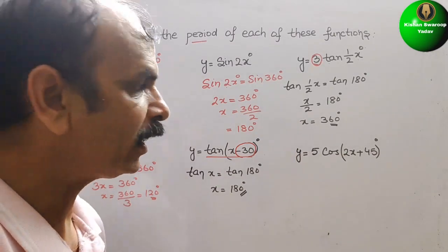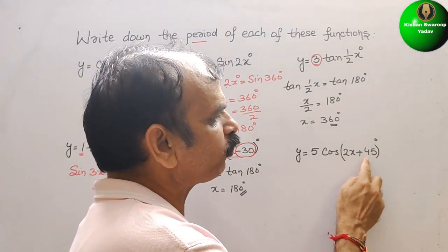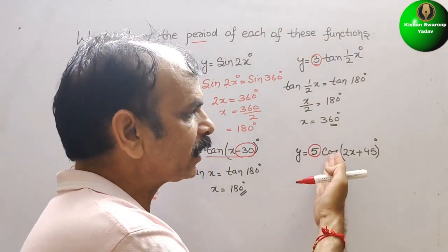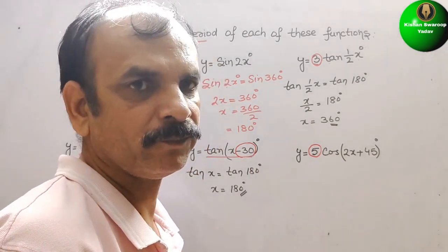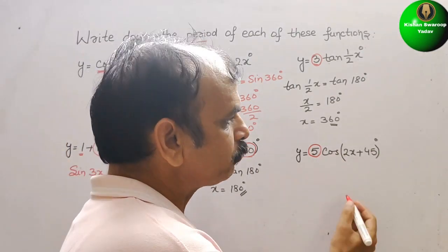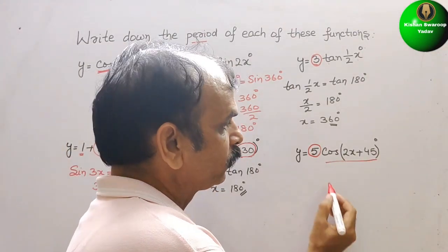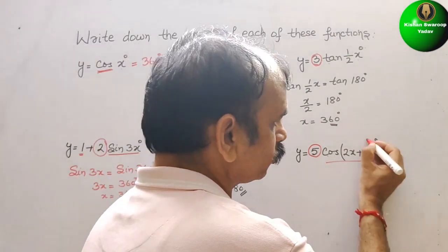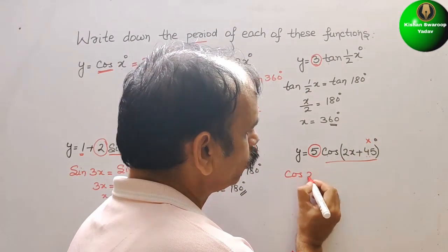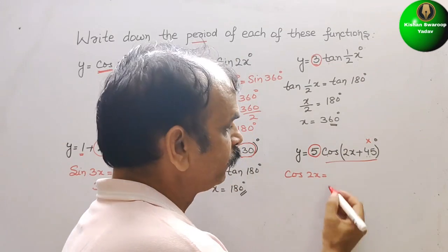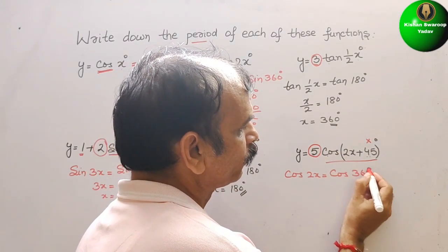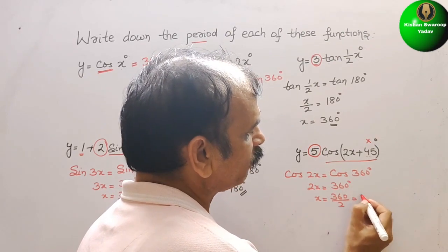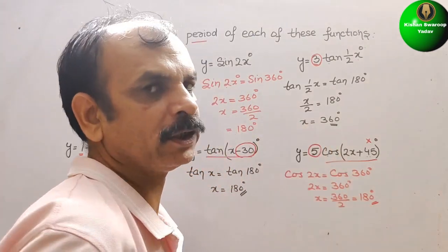Next, y = 5 cos(2x + 45) degrees. The 5 is the amplitude, and 45 degrees is the phase shift in the x-axis — we don't need to consider either. We only look at cos 2x. The cos wave completes in 360 degrees, so cos 2x = cos 360 degrees gives 2x = 360 degrees, therefore x = 360 divided by 2, which equals 180 degrees. The period is 180 degrees.